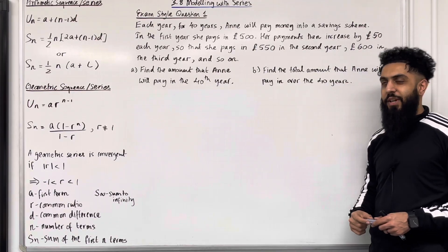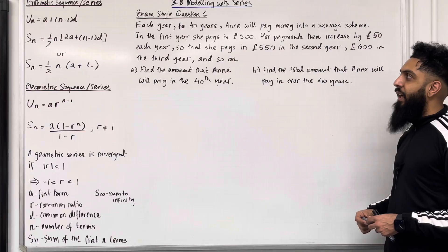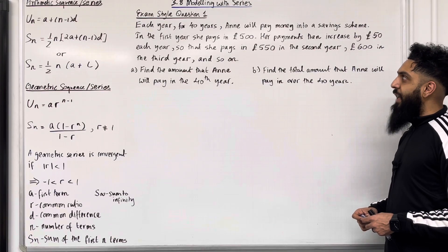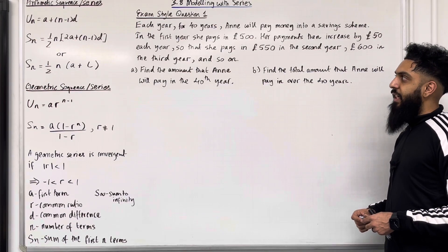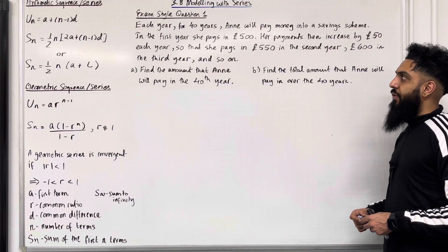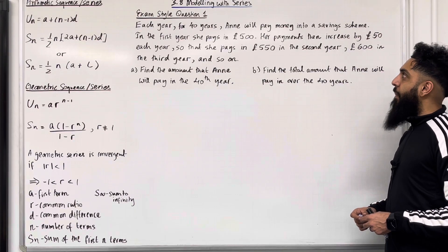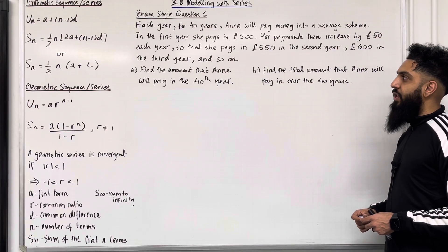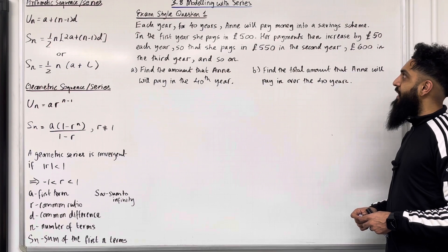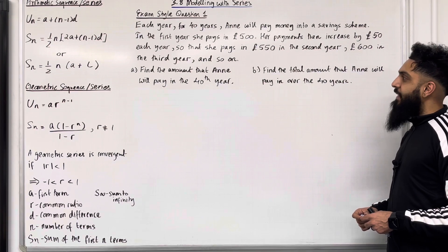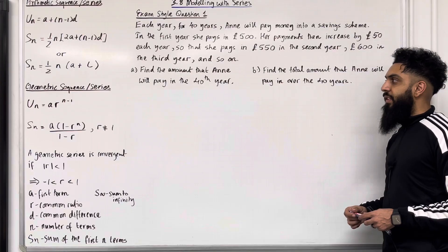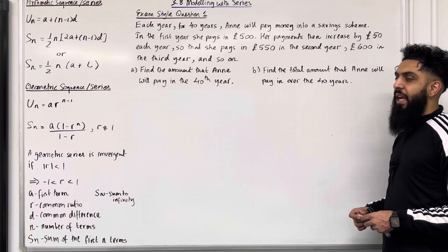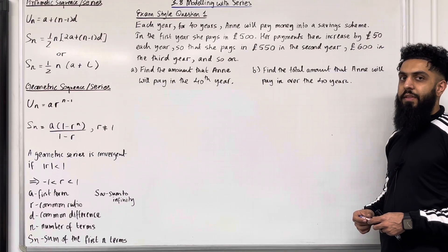Here is exam-style question 1. Each year for 40 years, Anne will pay money into a savings scheme. In the first year, she pays in £500. Her payments then increase by £50 each year, so that she pays in £550 in the second year, £600 in the third year and so on. Part A: find the amount that Anne will pay in the 40th year.